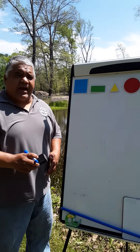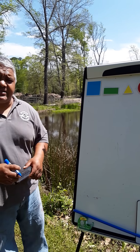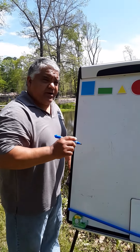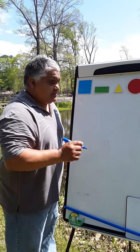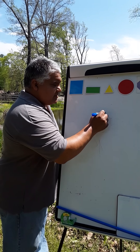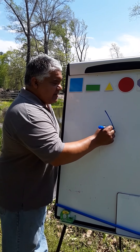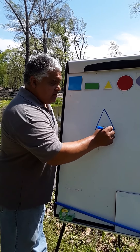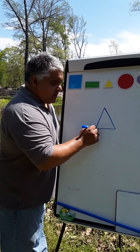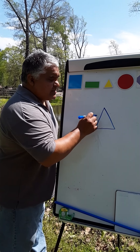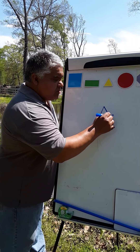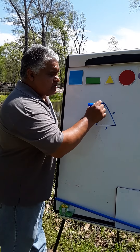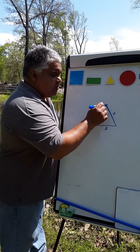What shape has three sides and three vertices? That's right — a triangle. A triangle has three sides: one, two, and three. And it has three vertices: one, two, and three.